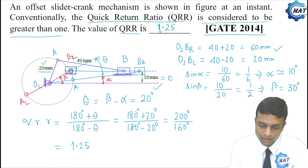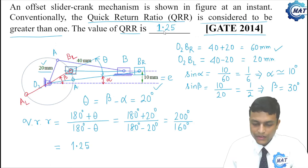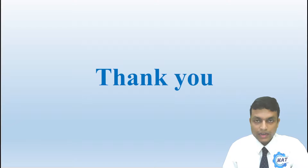This is the answer. We can easily determine the quick return ratio of an offset slider crank mechanism. Thank you.